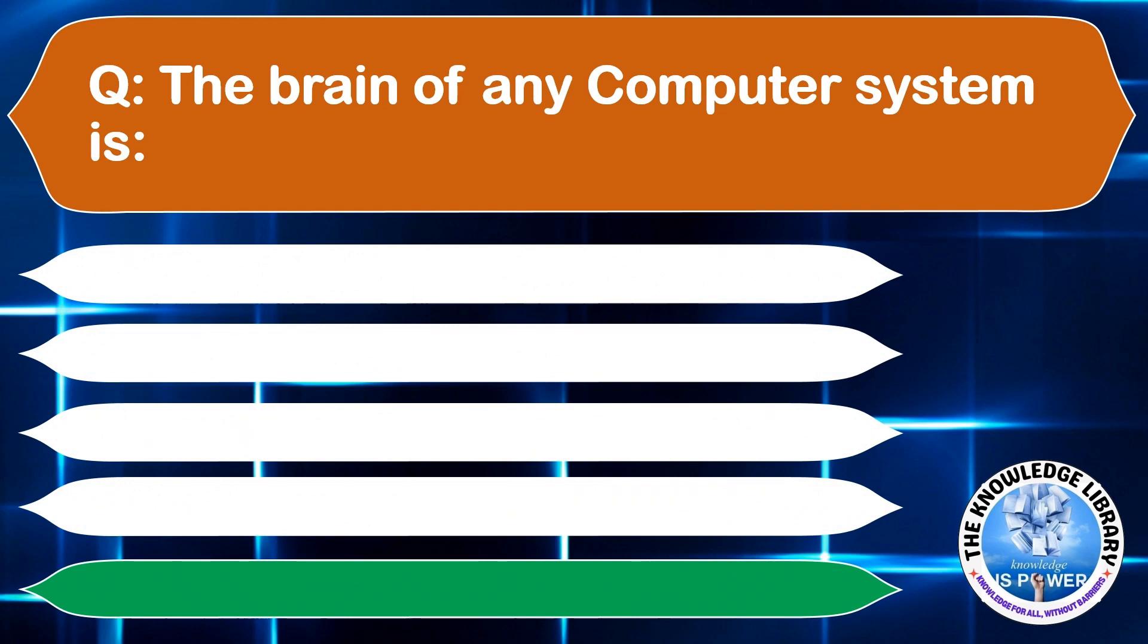The brain of any computer system is: A: Control unit, B: Monitor, C: CPU, D: ALU. The correct answer is option C, CPU.